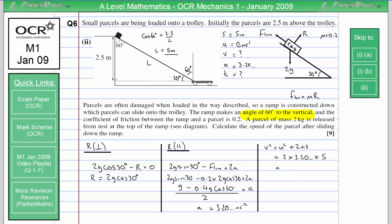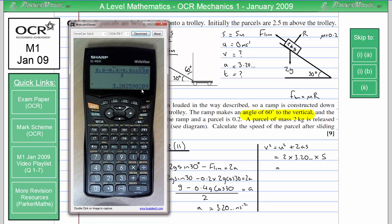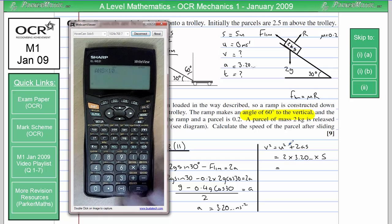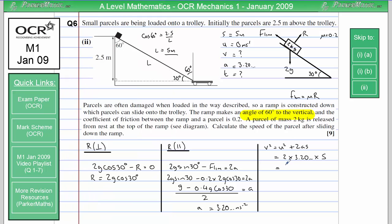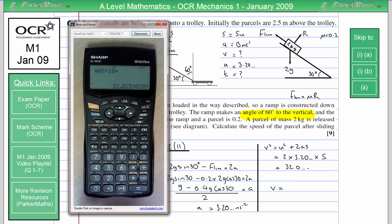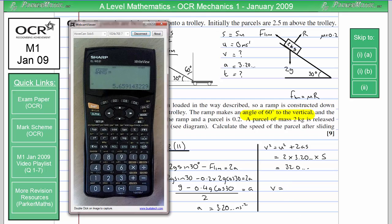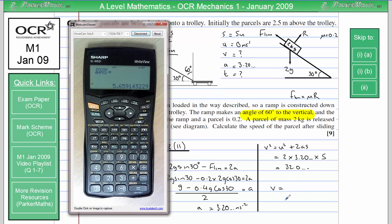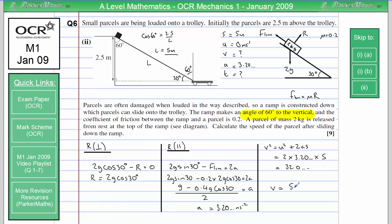Remember, I've got the value for the acceleration still stored in my calculator here, so I need to times that by 10, which gives me 32.0 and so on. So, to get V, all I need to do is square root that and I get 5.66 to 3 significant figures.